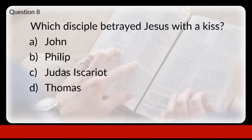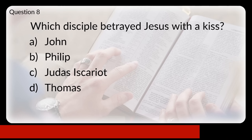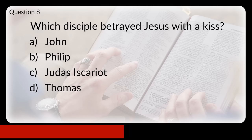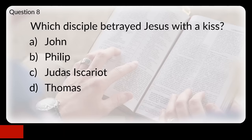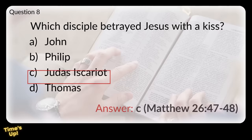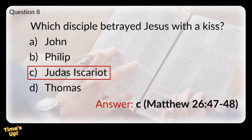Question eight: which disciple betrayed Jesus with a kiss? Was that John, Philip, Judas Iscariot, or Thomas? The answer was C, Judas Iscariot.